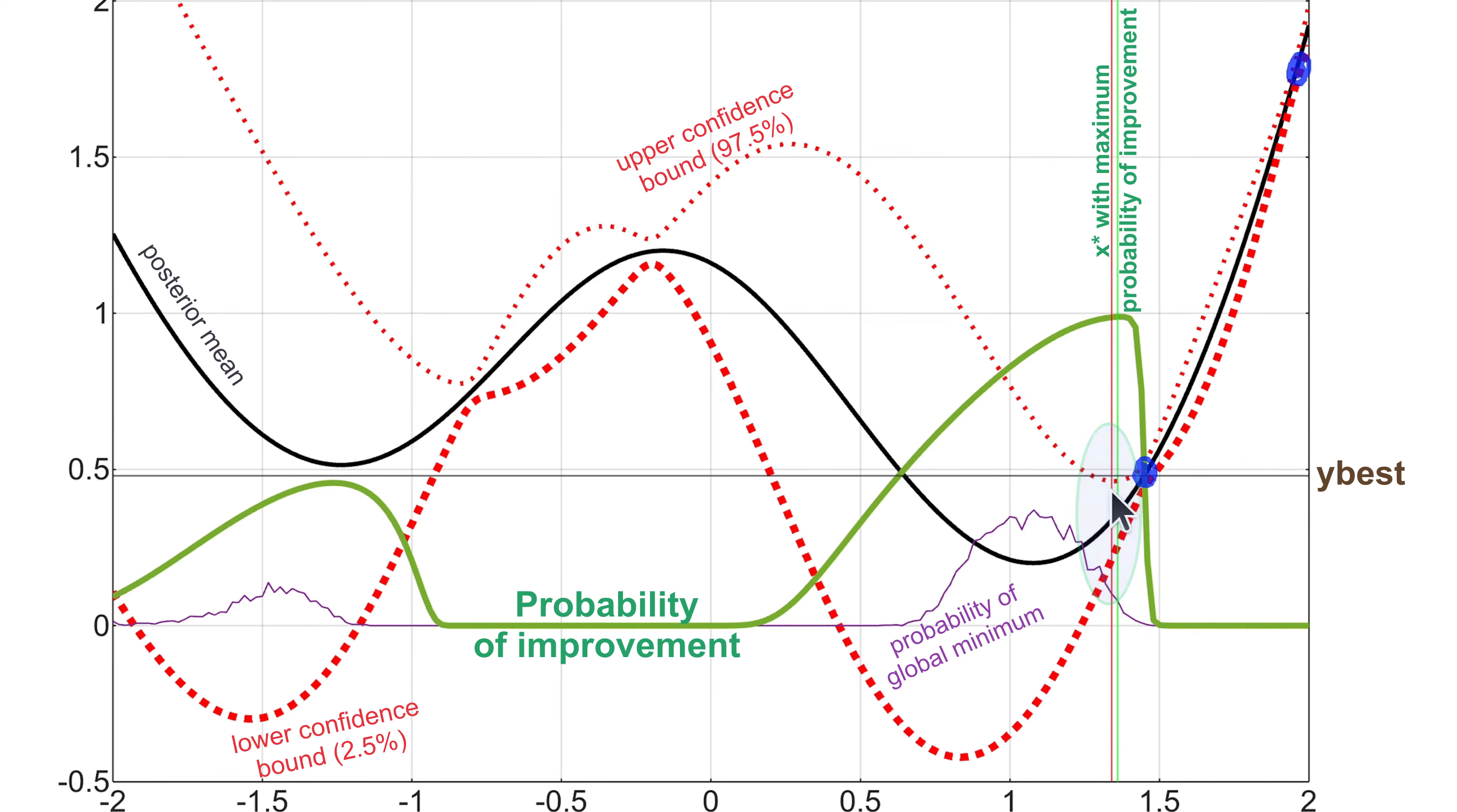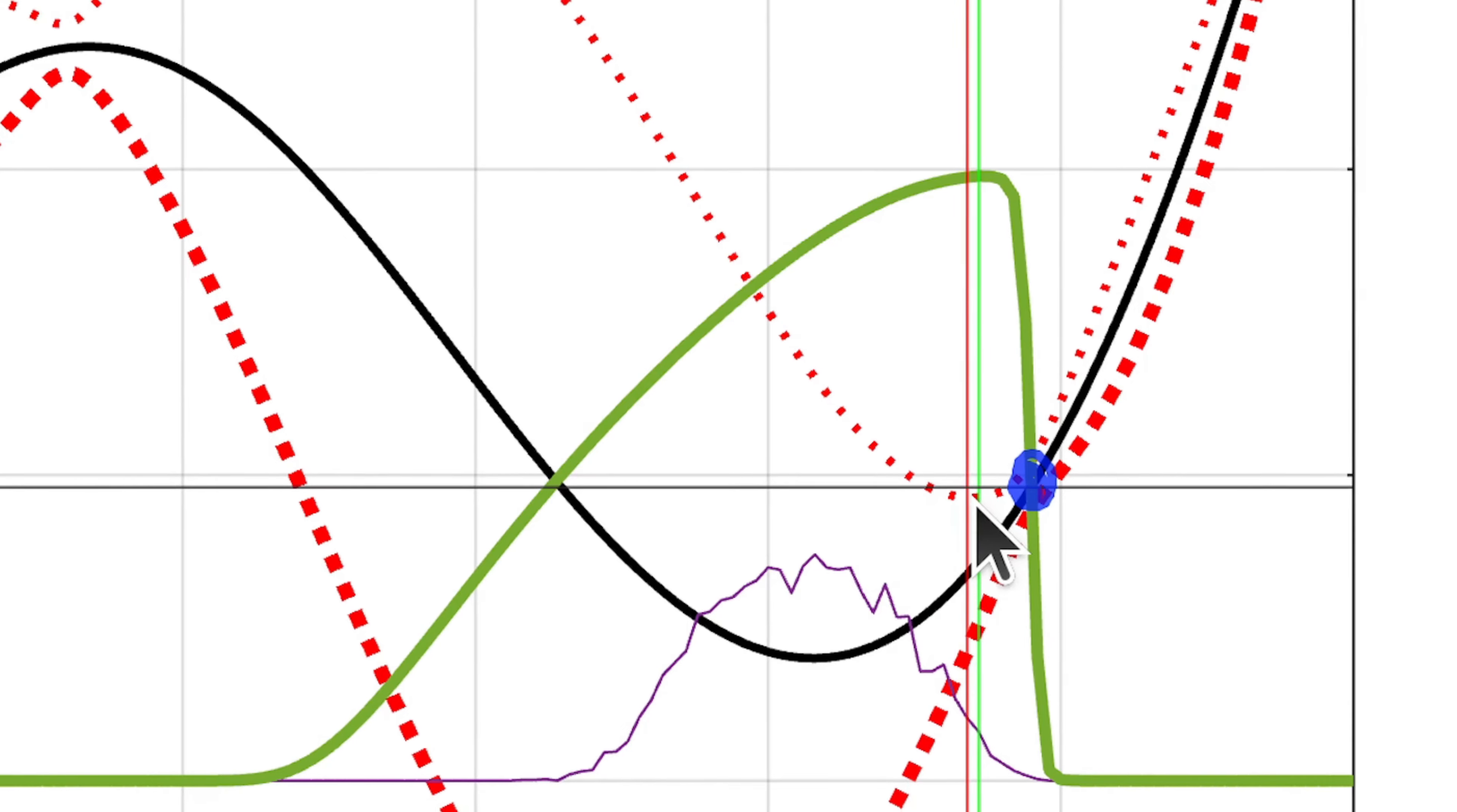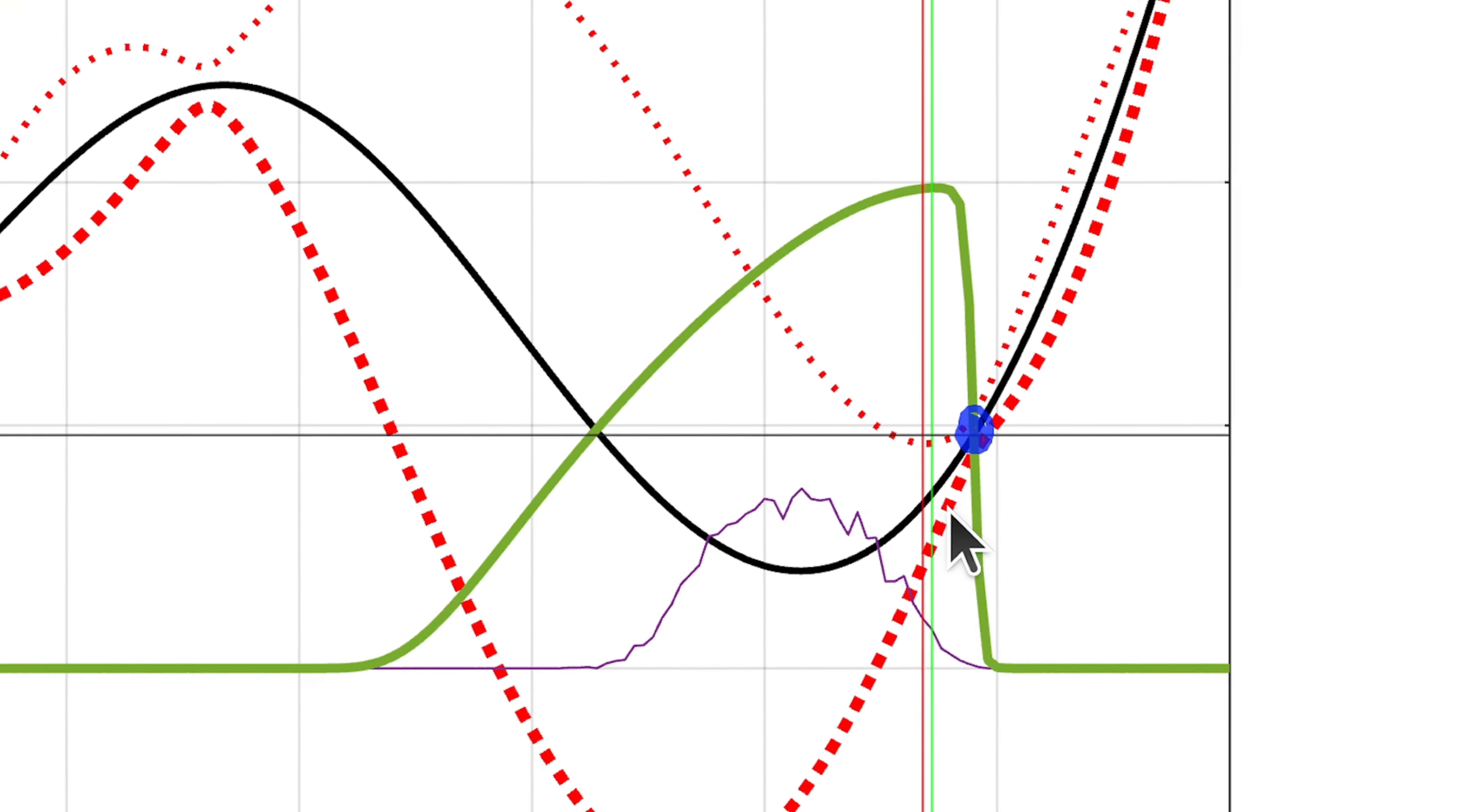It is related with, somehow, the point in which the upper confidence bound is lower. It's probability of improvement is larger than 0.975 if the upper confidence bound is below y best. This is the meaning of this probability of improvement.